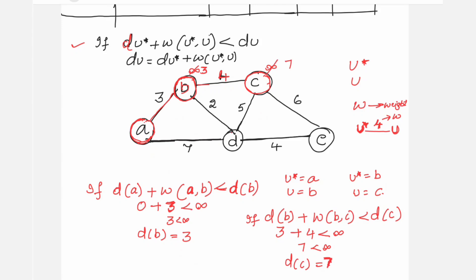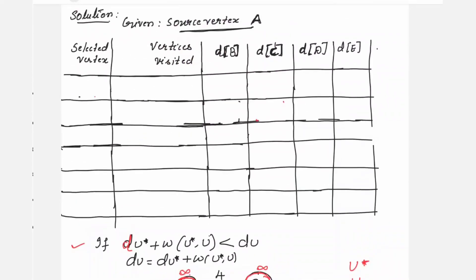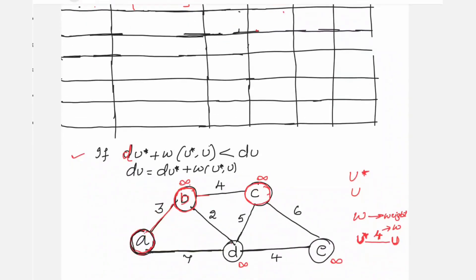This way, you keep updating values to reach the destination vertex using this formula. Initially, starting with source vertex A: the selected vertex is A, no vertices have been visited yet, and the distances to reach B, C, D, and E are all infinity, since A does not yet know the distances to the other nodes.